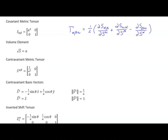First, we use the formula for the Christoffel symbol of the first kind, using the partial derivatives of each of the elements of our covariant metric tensor. Once we do that, we can contract those results with our contravariant metric tensor, and that will raise the index to get our Christoffel symbol of the second kind. This method works for any manifold, the same method we used back in video 31.